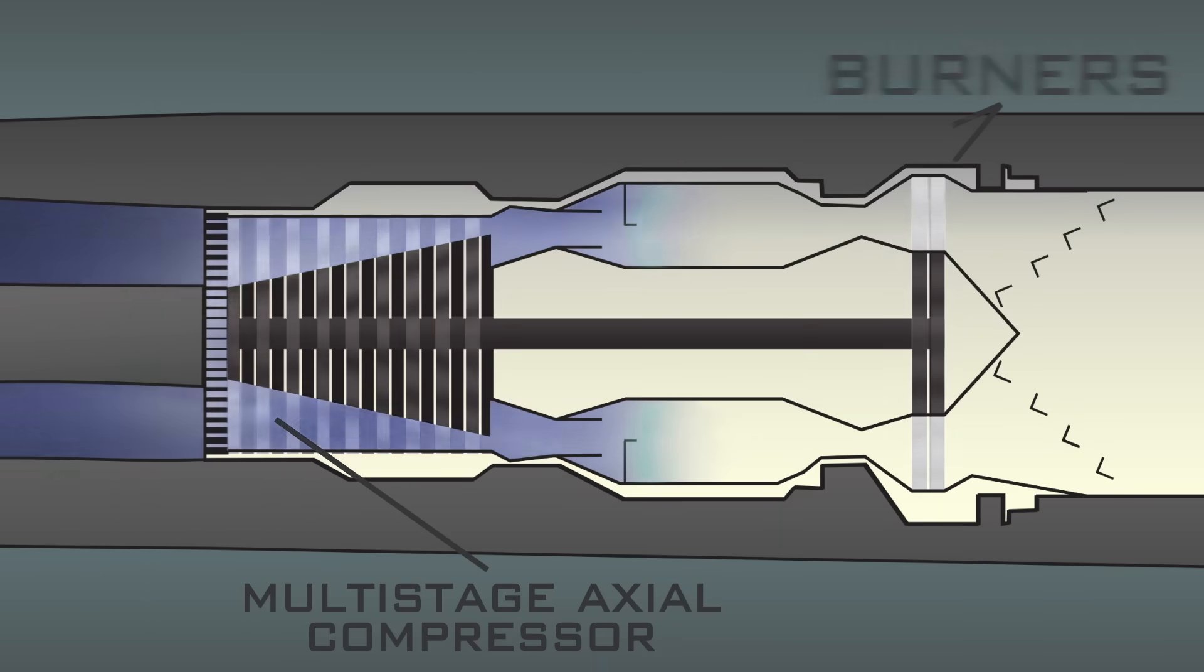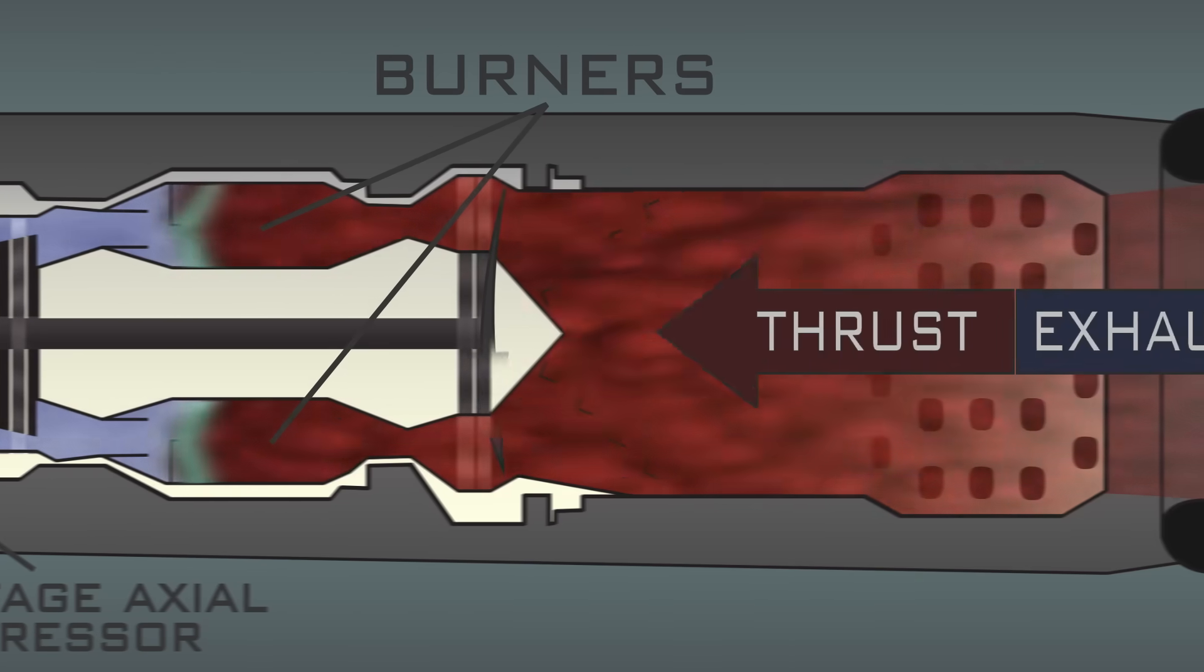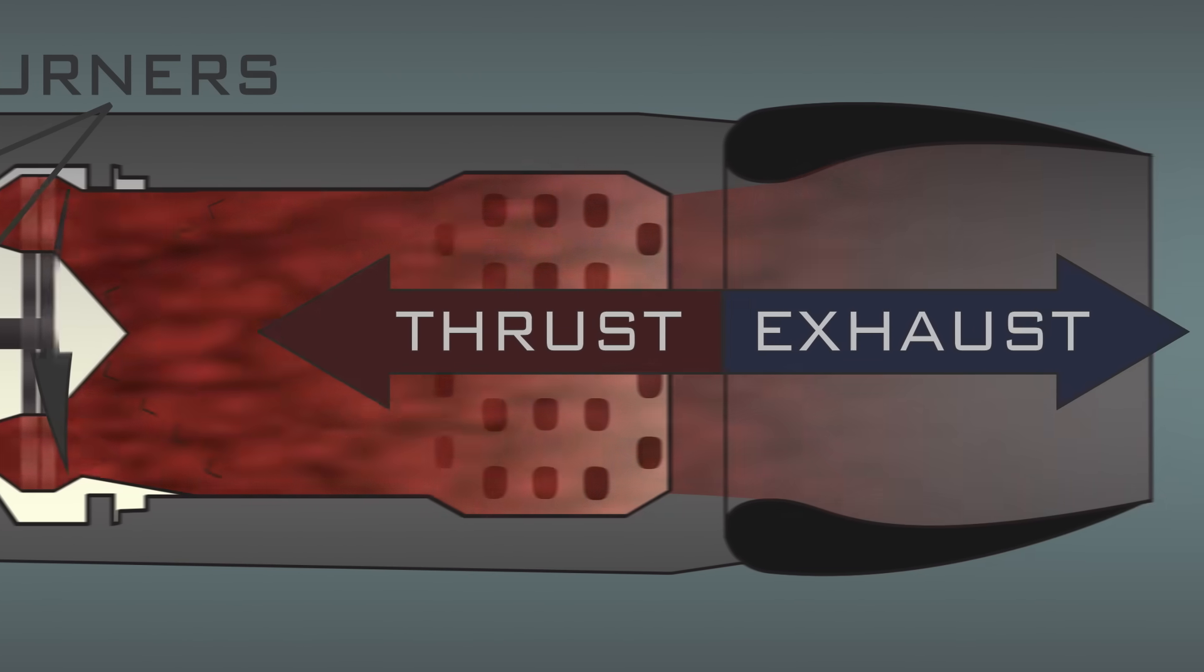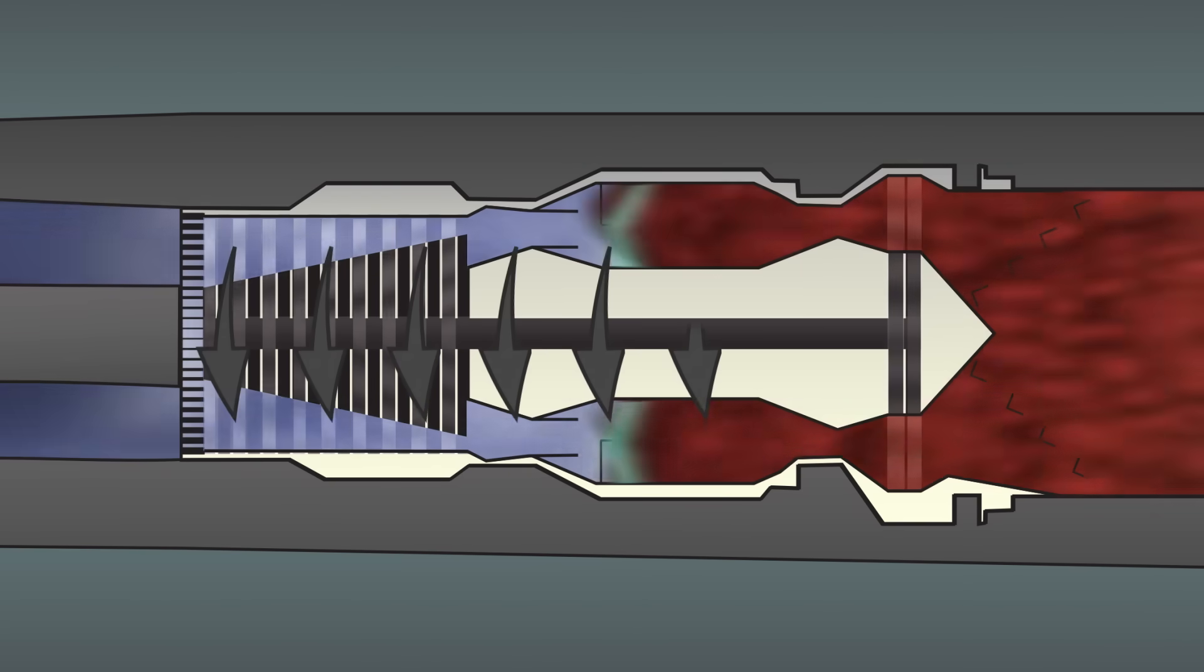Here the air is compressed before heading into the burner where fuel is added for combustion. The heated exhaust turns the turbine and provides the engine's forward thrust as it's accelerated to high speeds by the ejector. The turbine turns the compressor and keeps the engine cycle going.